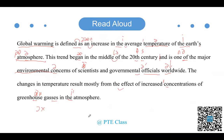那接下来我们再来正常语速地读一遍。Global warming is defined as an increase in the average temperature of the earth's atmosphere. This trend began in the middle of the 20th century, and is one of the major environmental concerns of scientists and governmental officials worldwide. The changes in temperature result mostly from the effect of increased concentrations of greenhouse gases in the atmosphere.